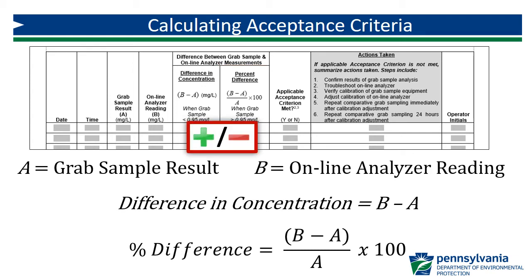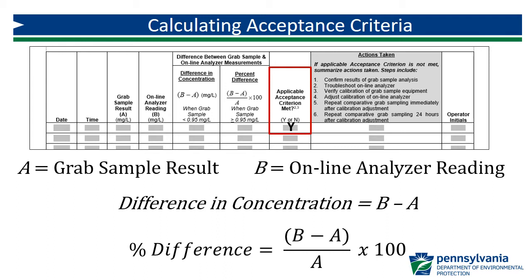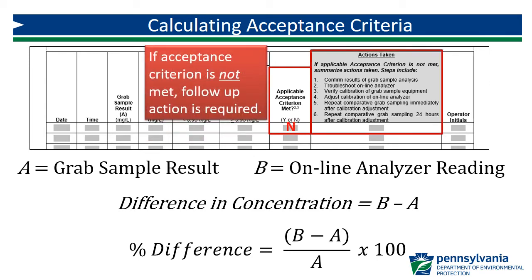Be sure to record if the difference or percent difference is negative. A negative percent difference indicates a result that is less than the grab result, while a positive percent difference is greater than the grab result. This is valuable information to track as your analyzer ages, and you can try to identify trends that may indicate that the calibration curve is shifting. If the difference or percent difference is within the applicable range of plus or minus 0.1 milligram per liter or plus or minus 15 percent, no additional action is necessary. If the appropriate acceptance criterion is not met, follow-up action is required.